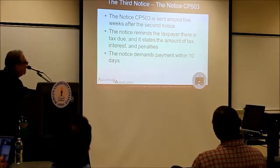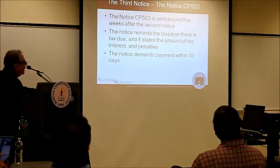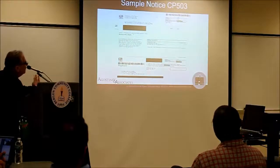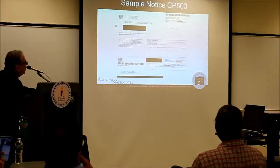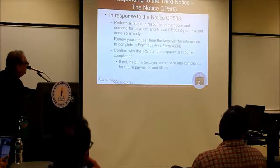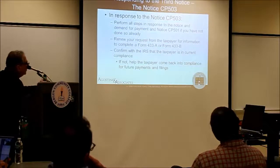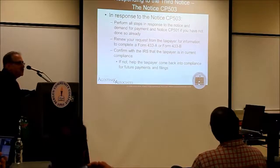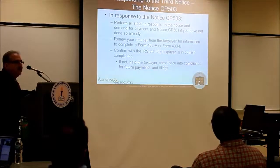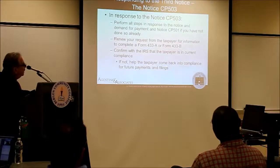The next notice is the CP503 — another five weeks have passed. It's a reminder that you've got interest and penalties. At the CP503, you're going to start submitting your collection alternative. You've got your 433A and 433B. This is where you decide: am I going for a partial payment installment agreement? Am I going for an offer in compromise?